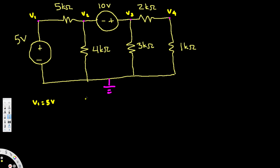Next, we have a supernode here. When we have a supernode, we take the whole thing as common, and then we use Kirchhoff's Current Law to create an equation. Whatever current exits — the addition of all currents — is equal to zero. Since we don't have any current entering or exiting the supernode externally, the sum of all currents equals zero.